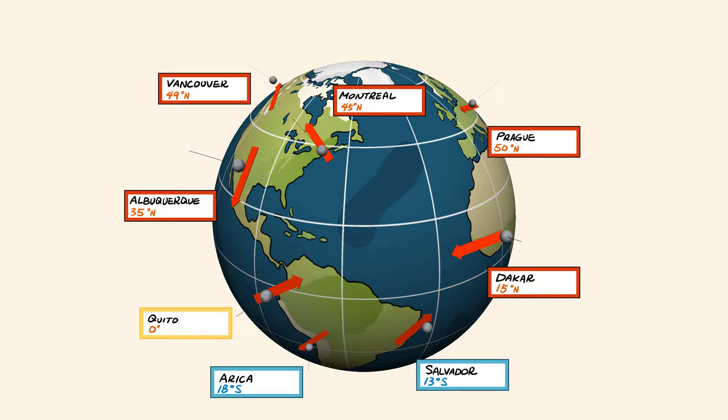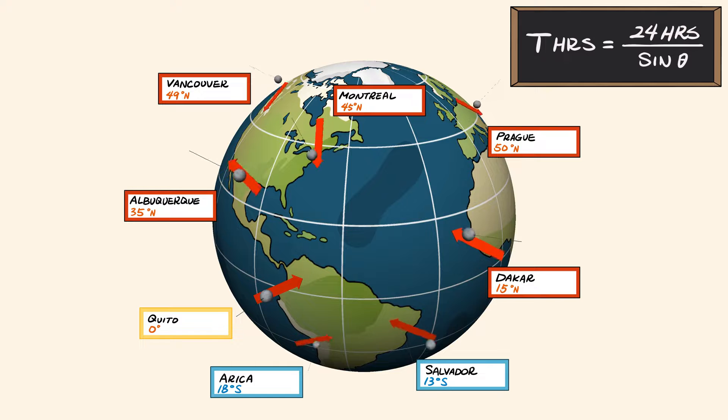If earth wasn't a spinning sphere, the relationship t equals 24 hours divided by sine theta would not predict the rotation of these many pendulums if they even turned at all.